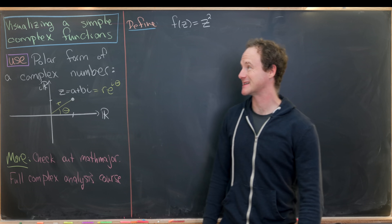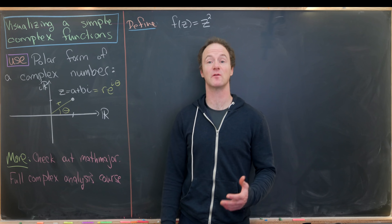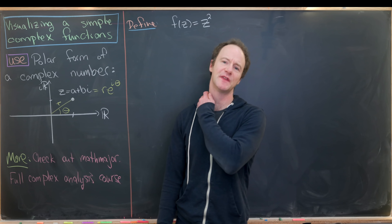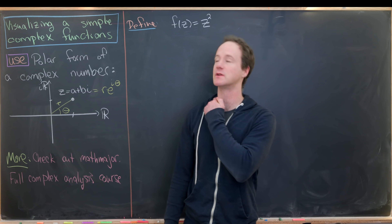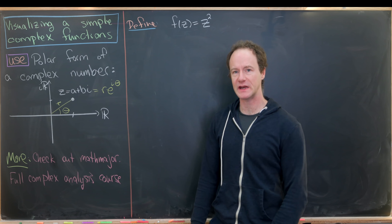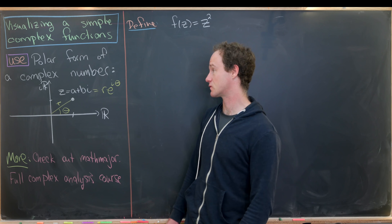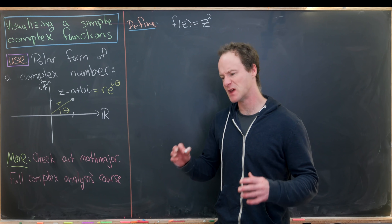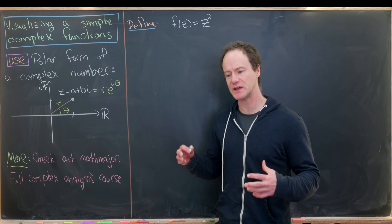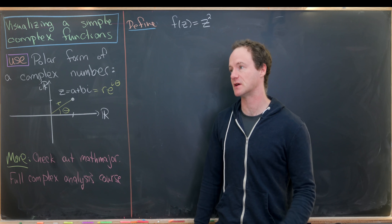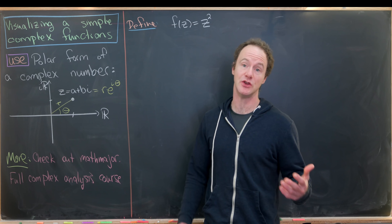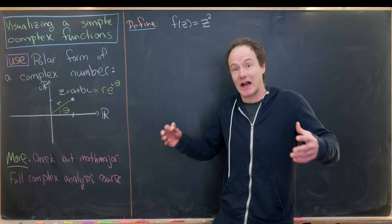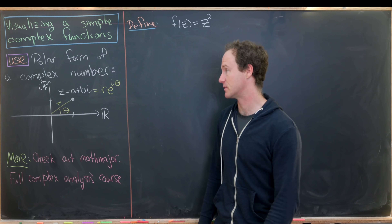Here we're going to look at some basic skills for visualizing complex functions, and we're going to do it with a very simple example. Before we get into it, I'd like to recall the polar form of a complex number. This is a really important form for a complex number when using it to visualize the action of a complex function.